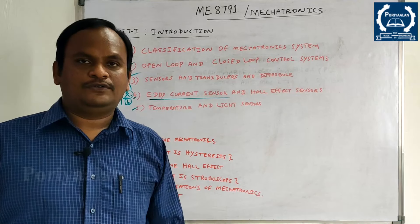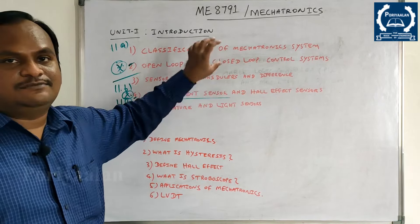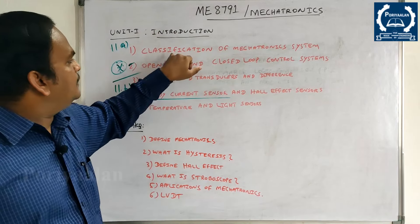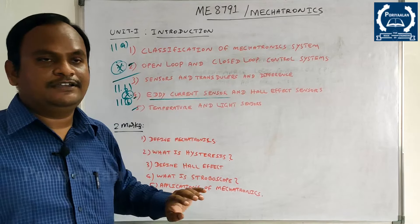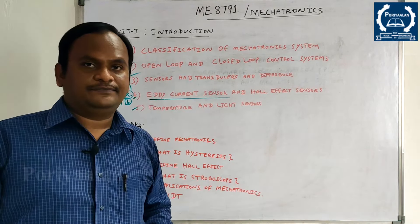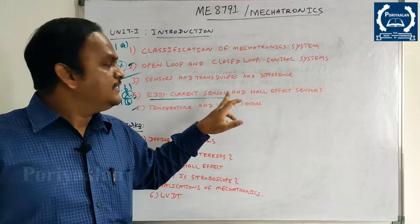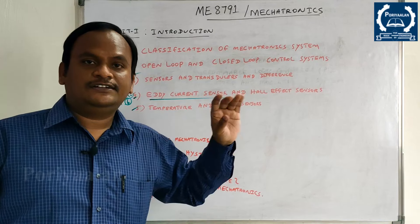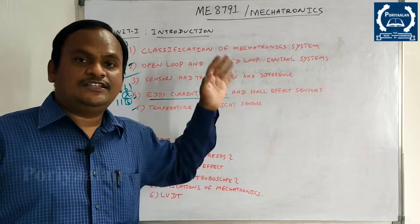Now, you will learn the two marks. In two marks, you will learn the classification of the mechatronics system. If you are learning the 13 marks, you will learn the types of mechatronics. Then, you will learn open loop and closed loop, and the circuit diagram for two marks. Then, you will learn sensors and transducers — the difference, the definition, and the types.